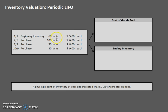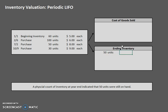So let's start accounting for this. We have 50 units that are still on hand at the end of the period. When we start to account for this we see that there are already 60 units in this top layer. So let's take those 50 units that we need and put those in our ending inventory — 50 units at $5 each.